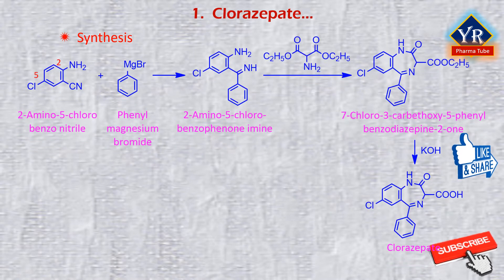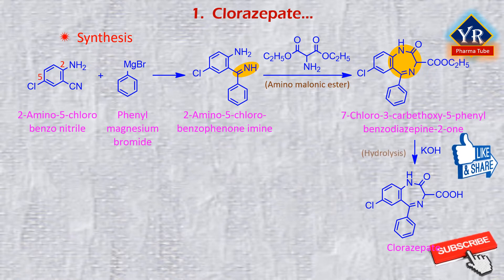Chlorazepate can be synthesized starting from 2-amino-5-chlorobenzonitrile. Upon reaction with phenylmagnesium bromide, it is transformed into 2-amino-5-chlorobenzophenone imine. Reacting this with aminomalonic ester gives a heterocyclization product known as 7-chloro-3-carbethoxy-5-phenylbenzodiazepine-2-one. Upon hydrolysis using an alcoholic solution of potassium hydroxide, this forms the dipotassium salt, chlorazepate.